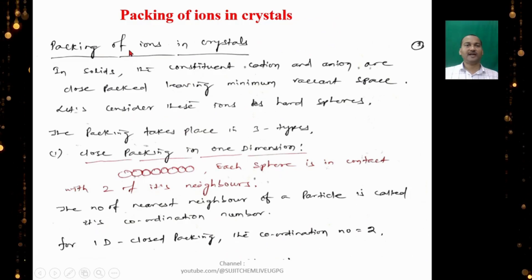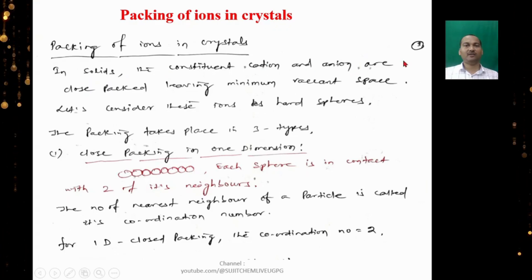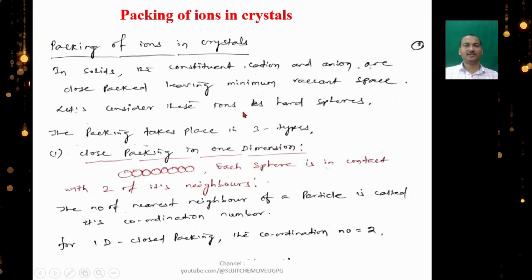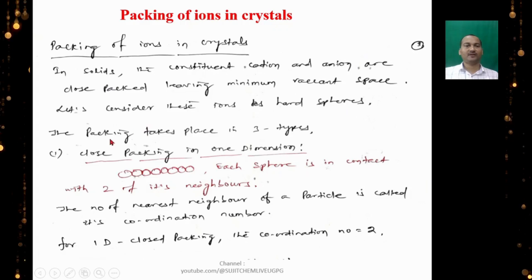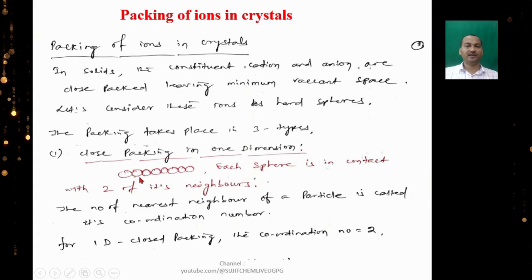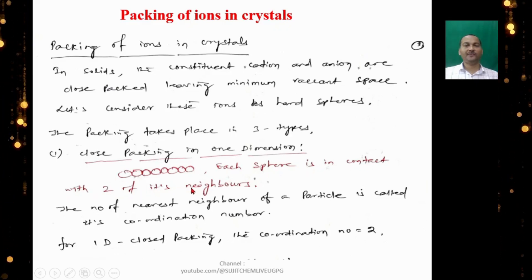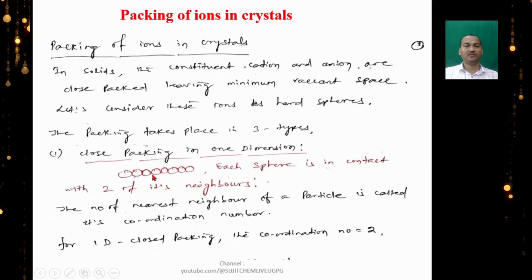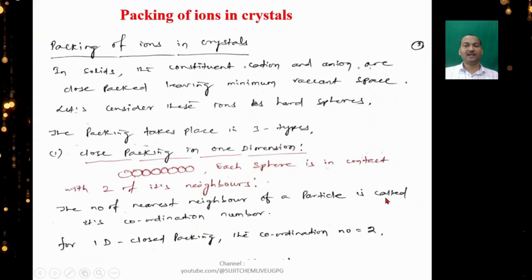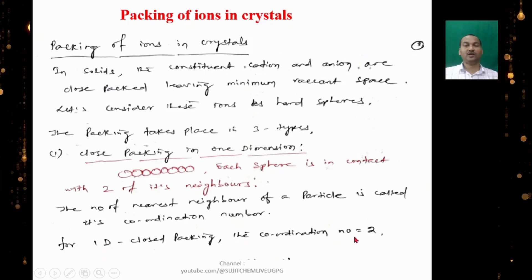In solids, the constituent cations and anions are close-packed, leaving minimum vacant space. We consider these ions as hard spheres. The first type of packing is close packing in one dimension, where each sphere is in contact with two of its neighbors. The number of nearest neighbors of a particle is called its coordination number. For 1D close packing, the coordination number is 2.